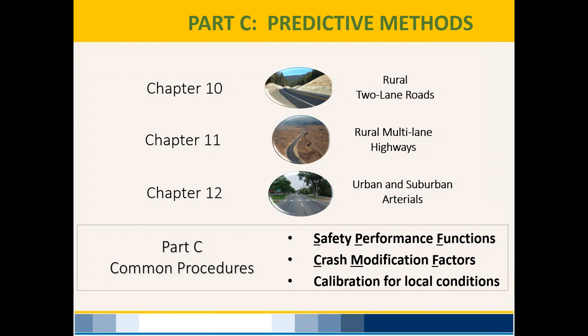It's important to realize that crash modification factors presented in Part C are specific to the safety performance functions they are paired with. For example, CMF values for lane width on multi-lane highways cannot be applied to lane width on rural two-lane roadways, even though both deal with lane width — because lane width affects safety performance differently on different roadway types. Measure twice, cut once — double-check that you have the correct CMF before calculating.